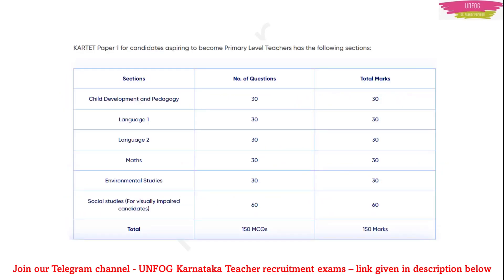This is how Paper 1 will be divided. Child Development and Pedagogy: 30 questions, each carrying one mark, so total marks will be 30. Language 1 will have 30 questions and 30 marks. Language 2 will have 30 questions and 30 marks. Maths will have 30 questions and 30 marks. Then Environmental Studies: 30 marks.